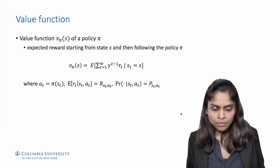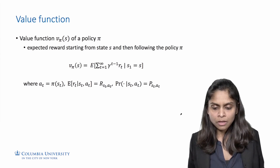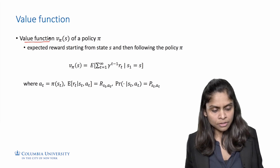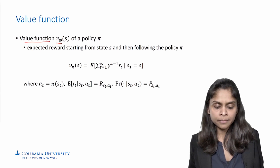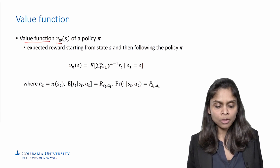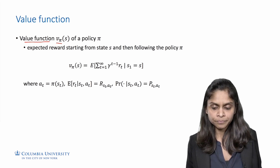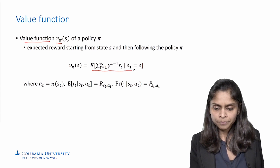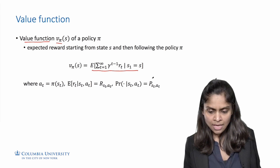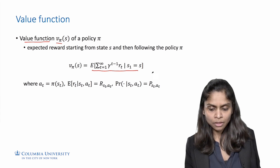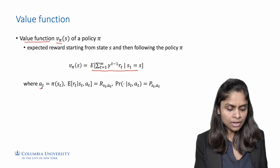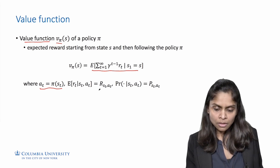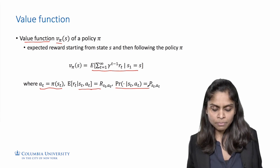To find the best policy, we need to be able to evaluate and compare policies. To evaluate a policy, it is useful to define the value function. The value function, written as V^pi for a policy pi, specifies for every state the value of the policy pi when starting in state s. This is defined as the expected discounted sum of rewards if the agent starts in state s and then follows policy pi forever. Following policy pi means that at every time t, the agent takes the action specified by the policy in the current state. The state distribution and expected rewards are given by the parameters of the MDP.